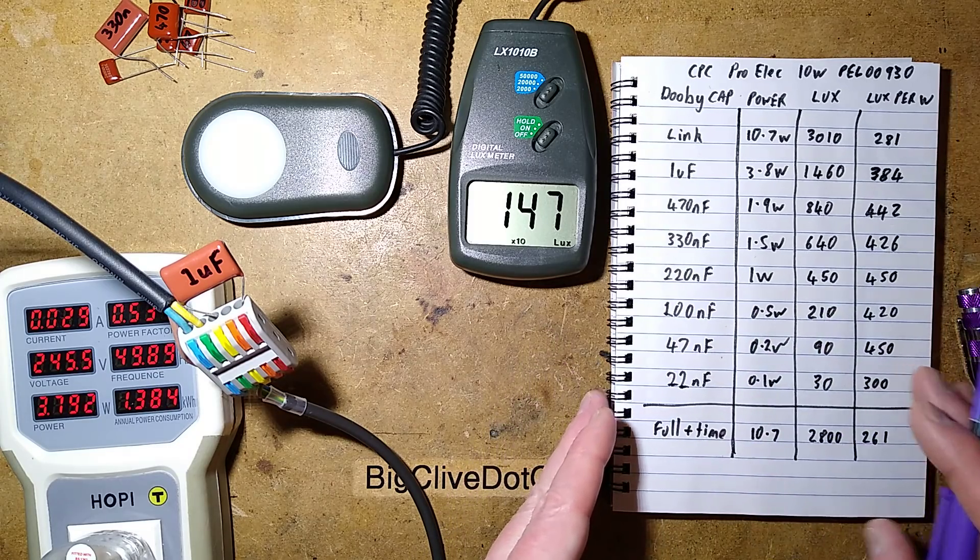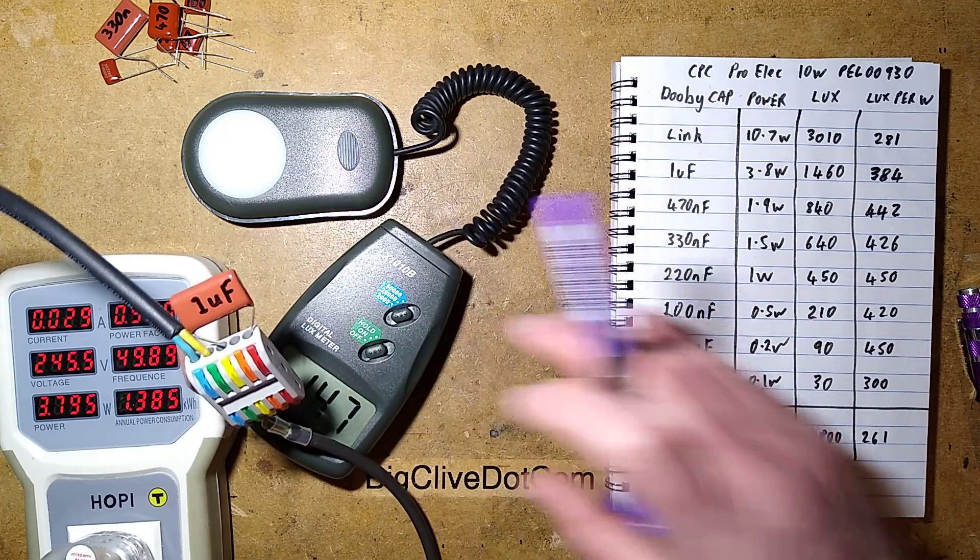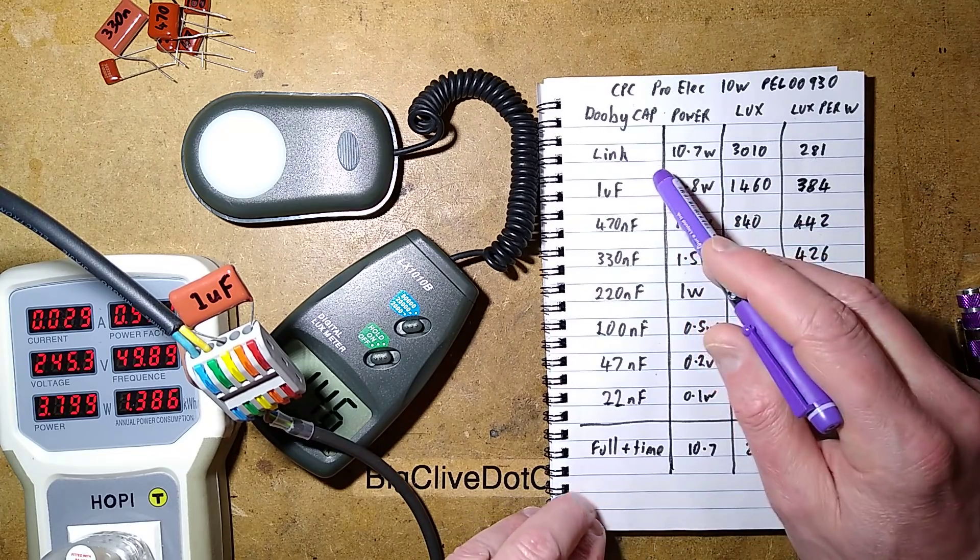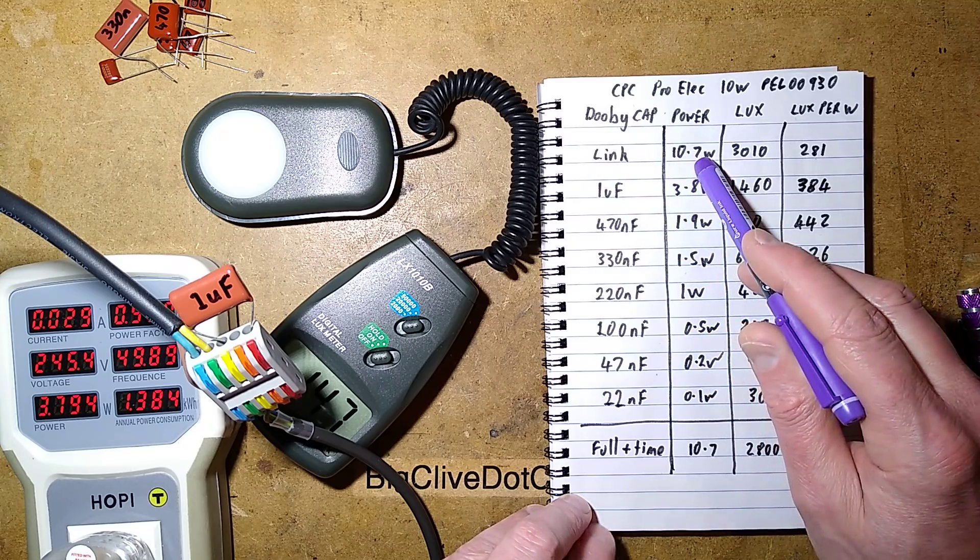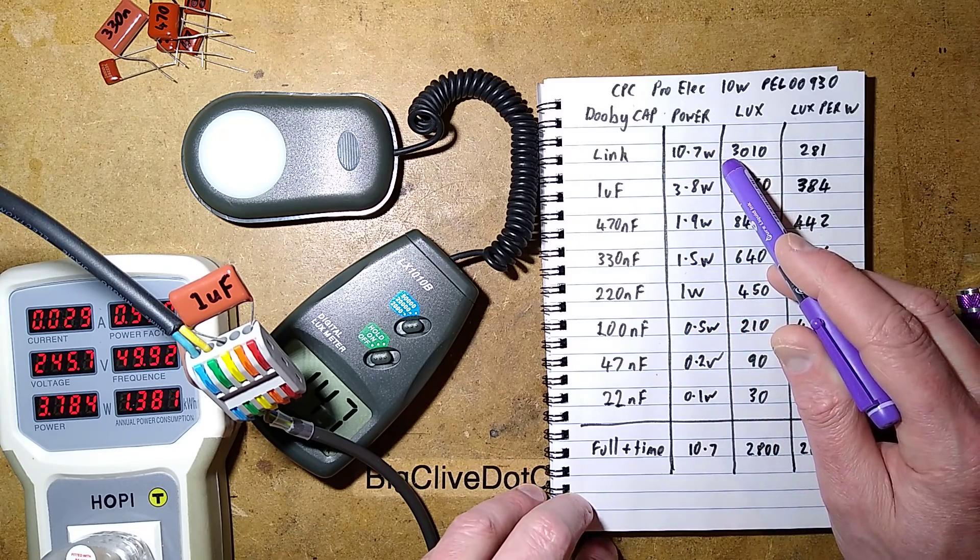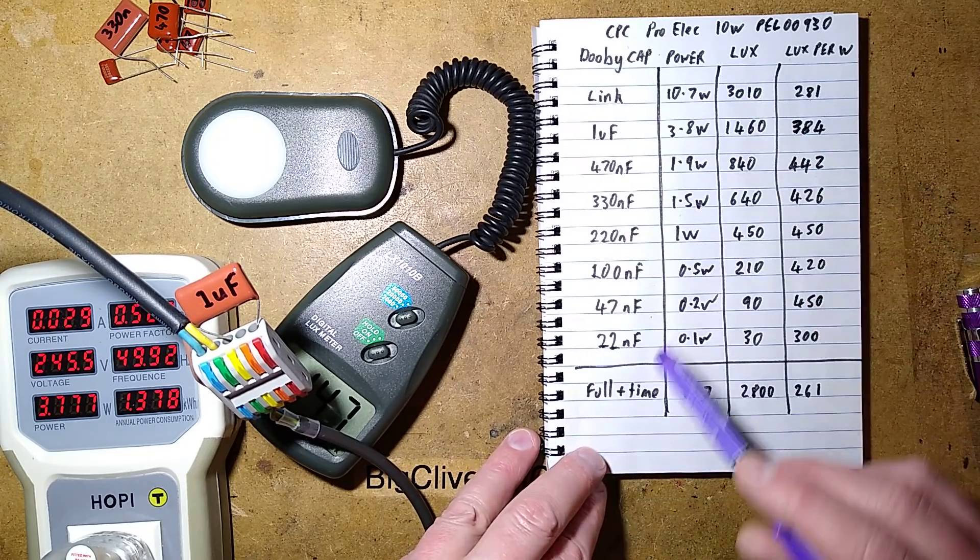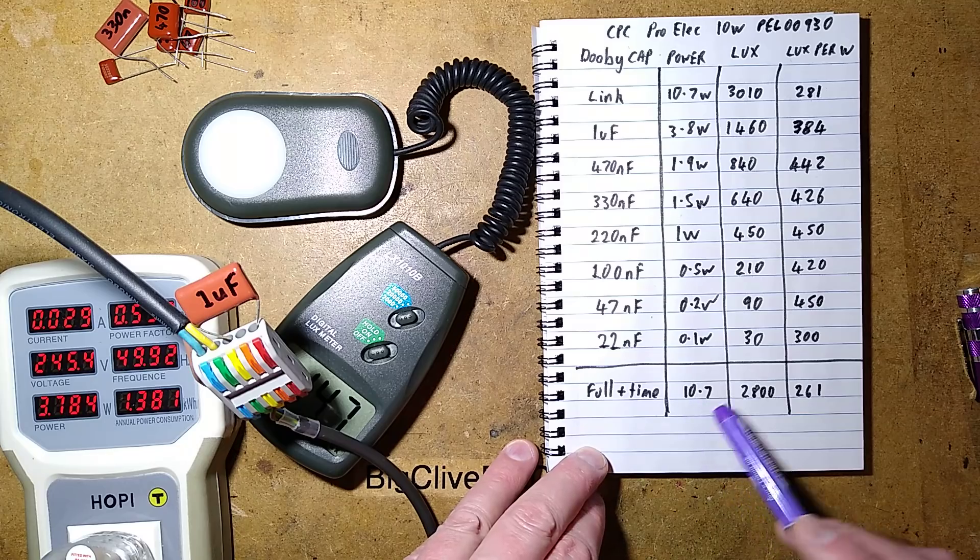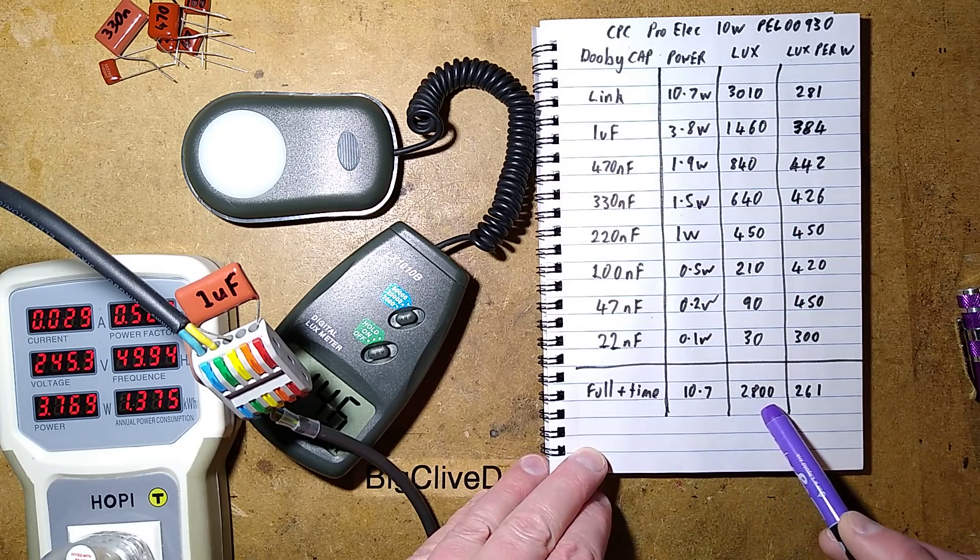When I did the test, I decided initially, I just powered it up briefly with the wire link in at 10.7 watts and it was showing 3,010 lux. I decided afterwards just to leave it running for a while, so I went for a bite to eat and once it had heated up, the 3,010 lux, it was drawing the same power, dropped to 2,800 lux.